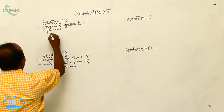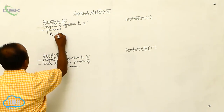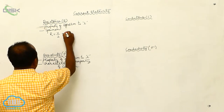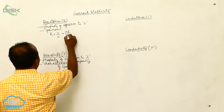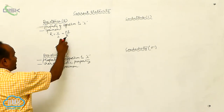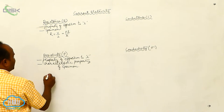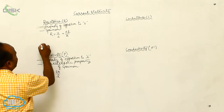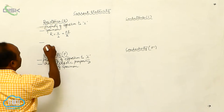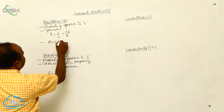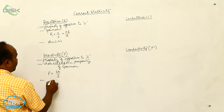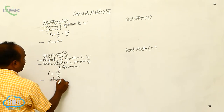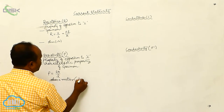The resistance formula is R equals V by I, which also equals Rho into L by A. Therefore, resistivity Rho equals R times A divided by L. The unit of resistance is Ohm (Ω). The unit of resistivity is Ohm into meter (Ω·m).